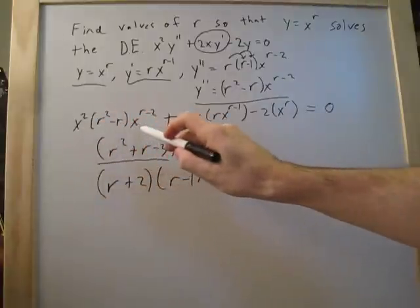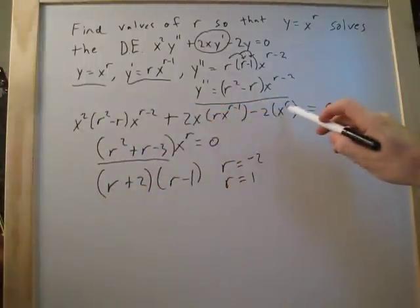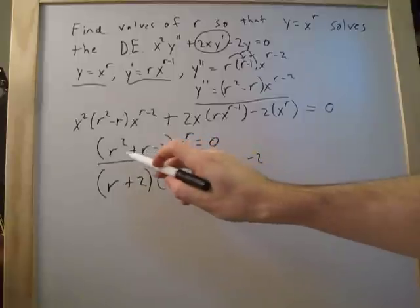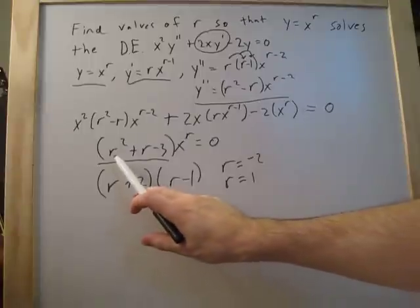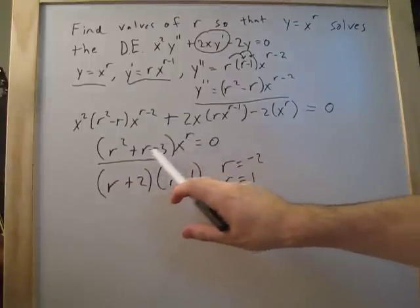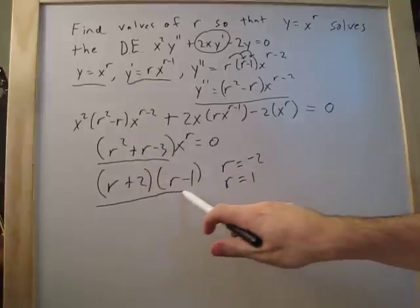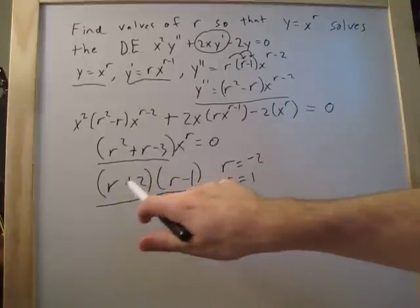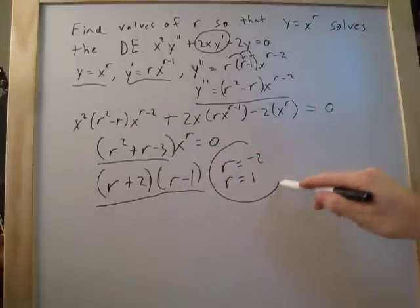Now I didn't go through and simplify all this stuff, but if you do that on your own, that's what you'll get, is this equation right here. You want to separate out the r's, and then this is x to the r, but this is what's going to give you this factorable equation right here. So there you go. This is your final answer right here.